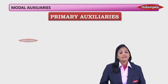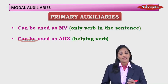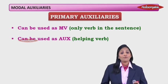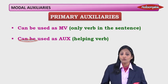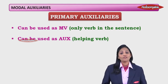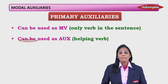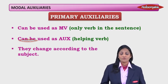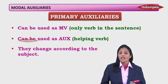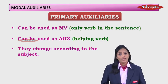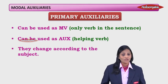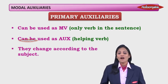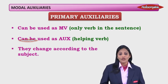Primary auxiliaries can be used as the main verb — the only verb in a sentence — and also as auxiliary verbs. Another important thing: they change according to the subject. For example, 'Salman is playing', but 'Salman and Sachin are playing'. The 'is' changes to 'are'. So primary auxiliaries change according to the subject.